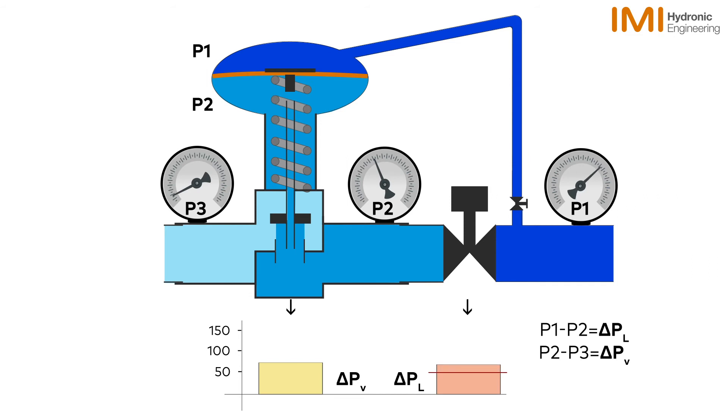As we can see, the DPCV will constantly see a change and act upon it as P1 to P3 is increased. It is able to accurately control delta PL until such a time as it reaches the minimum opening.